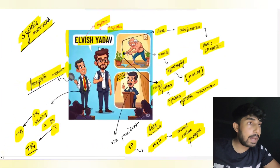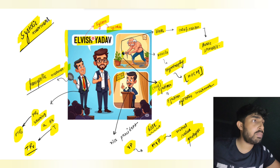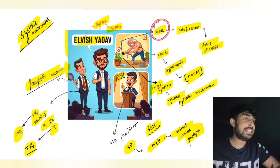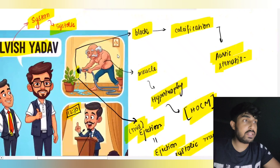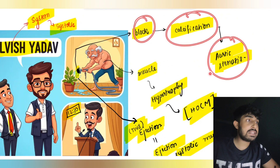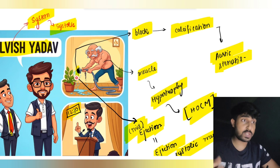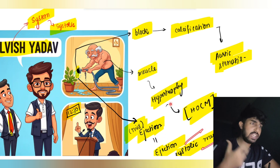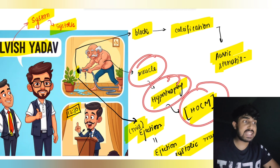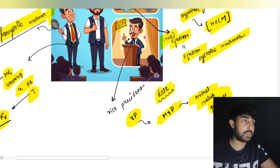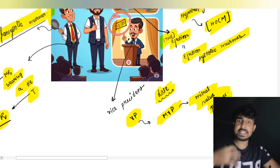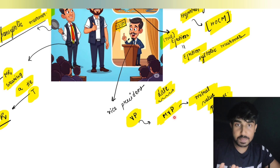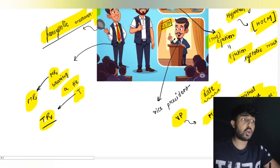Let's recap systolic murmurs. Elvish is the brand ambassador of 'system' — systolic murmurs. The block at the pipe represents calcification — aortic stenosis — and since water is being ejected, these are ejection systolic or mid-systolic murmurs. He is very muscular, so hypertrophic obstructive cardiomyopathy. The vice president is late — 12:30 — VP means MVP, which is mitral valve prolapse, a late systolic murmur. Mister holds a pan — pan-systolic murmurs — mister is MR (mitral regurgitation), and the tie is tricuspid regurgitation.